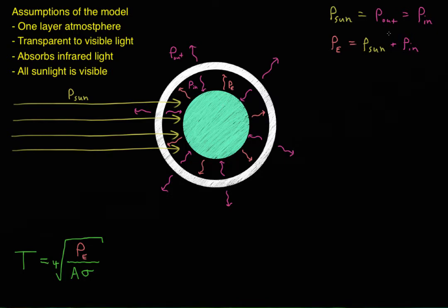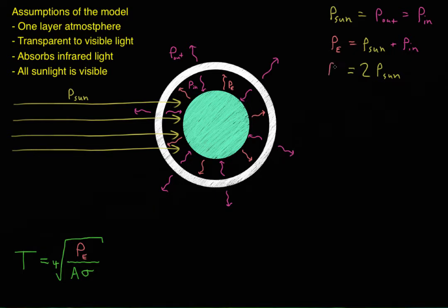From our equation up top, we know that P-in is actually equal to P-sun. So we can rewrite this equation: P-e equals two times P-sun, because P-in equals P-sun and P-sun plus P-sun is just 2*P-sun. So the radiation coming out of the Earth is actually twice the incoming radiation from the sun. By adding this one layer atmosphere, we actually doubled the amount of radiation hitting the surface of the Earth, and therefore doubled the amount that the Earth has to radiate away. And to radiate away that extra energy, the Earth has to be hotter.